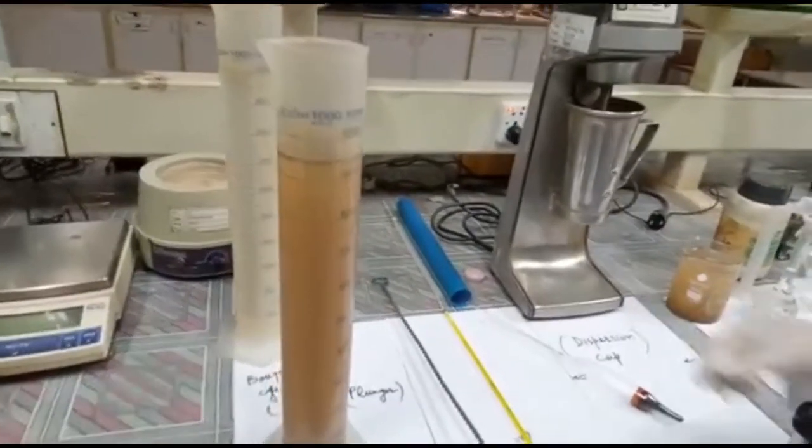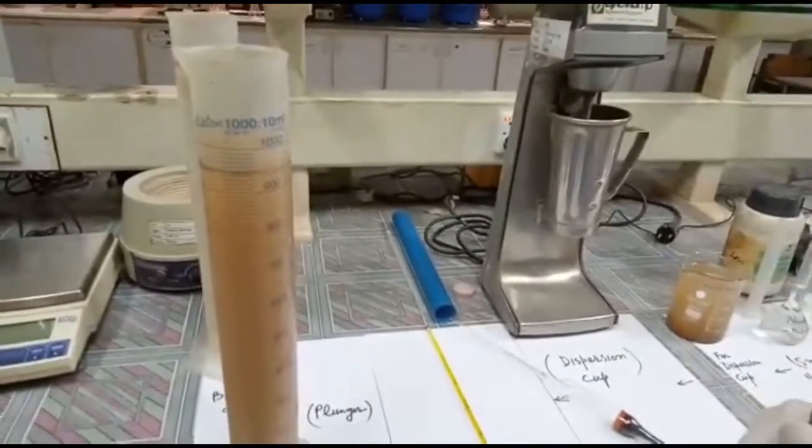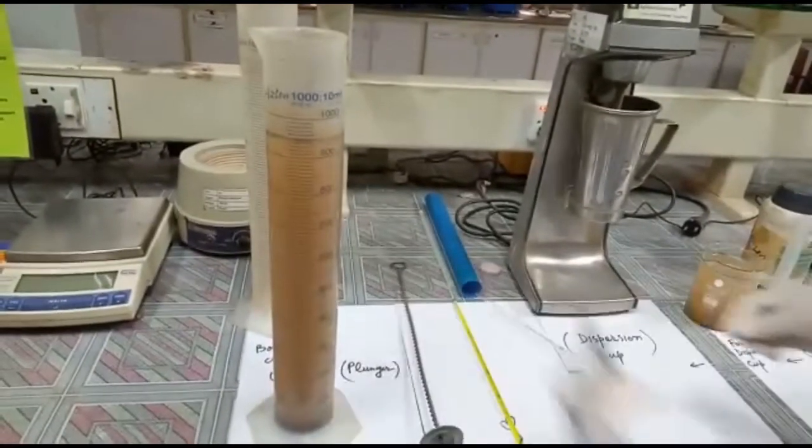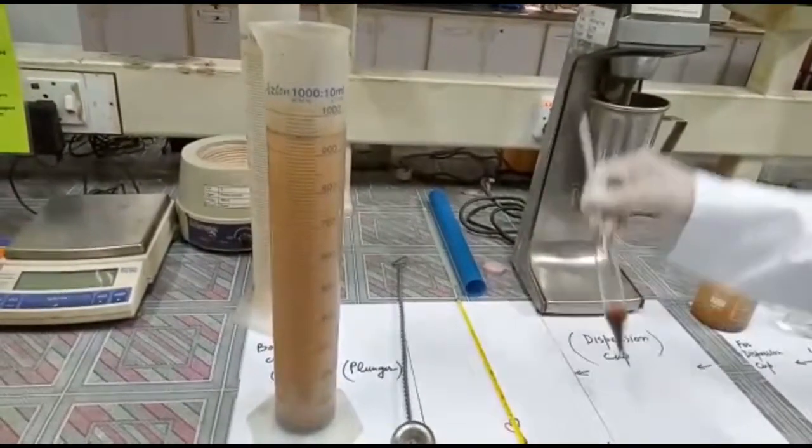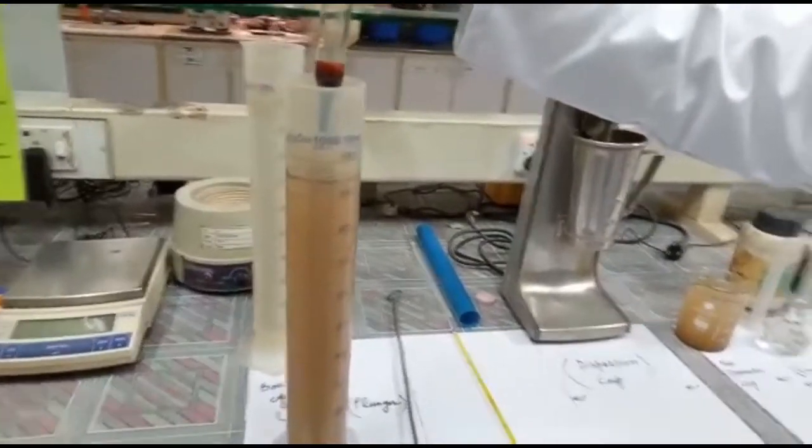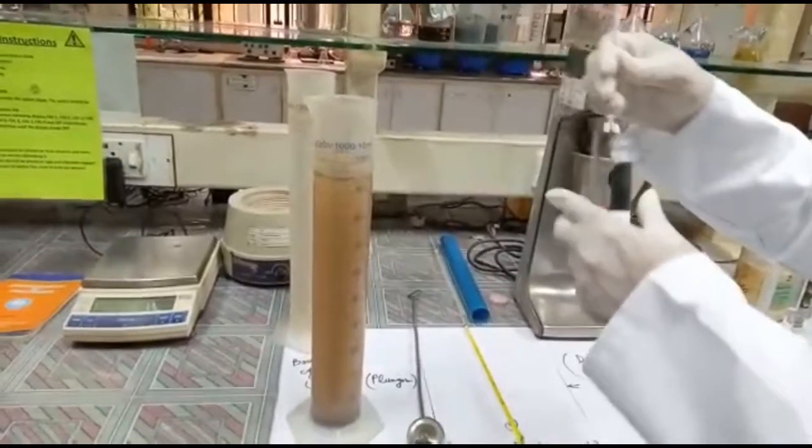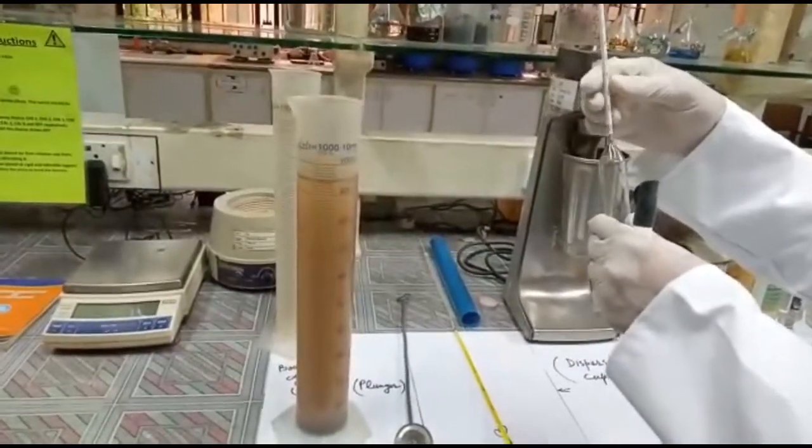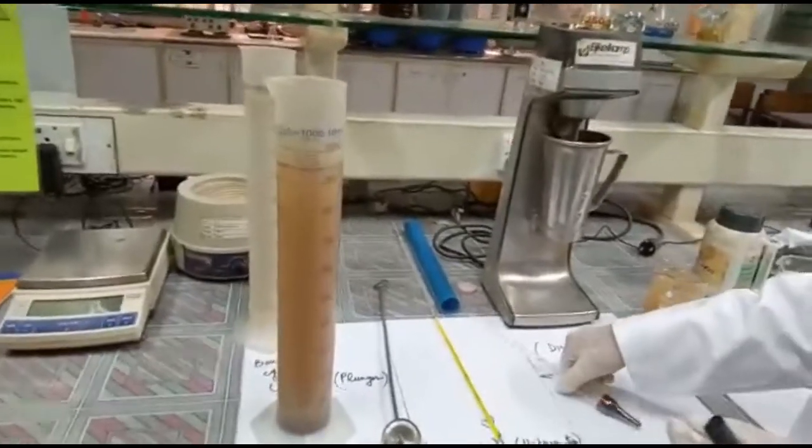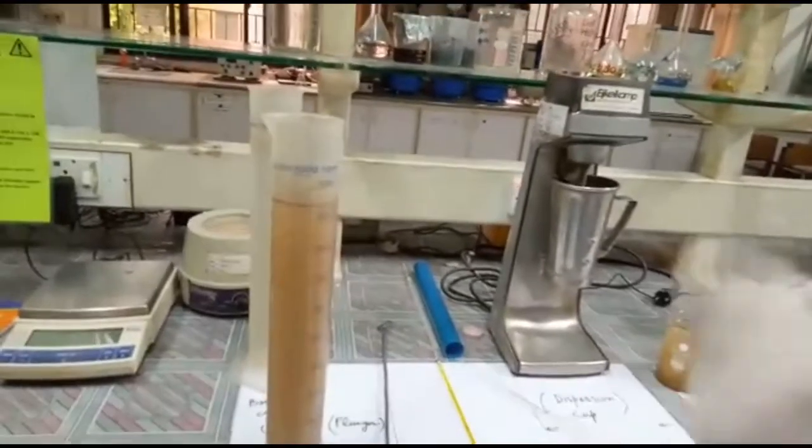First we will shake this suspension and allow it to stand for 20 seconds. After 20 seconds, we insert this hydrometer in the suspension and we take the reading. This is the 40 second reading, and basically this 40 second reading is the reading of sand and clay. Because in 40 seconds, the sand settles down.